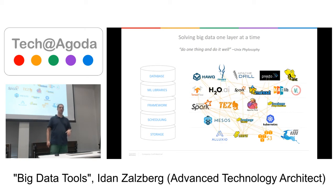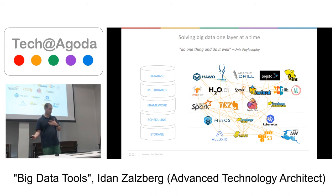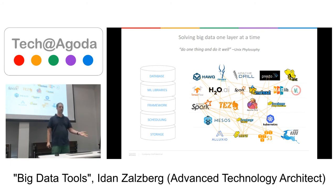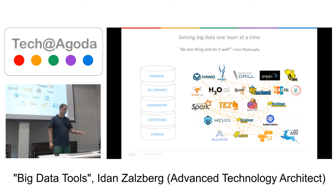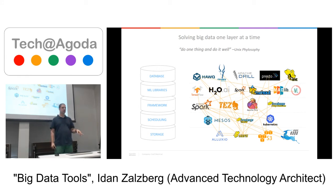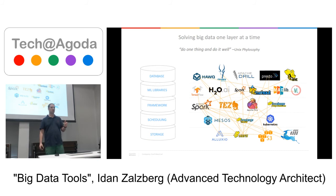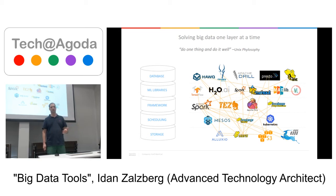The key thing to understand when getting into this world is that these layers have to be connected. The database has to know how to work with storage and allocate resources on the scheduler — and that's not always the case. Not everything works with everything. One of the most connected tools is Spark, which is a big advantage — it works with everything and is built that way. It's not necessarily the fastest for all tasks, but its ability to work with every possible scenario makes it very appealing.